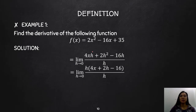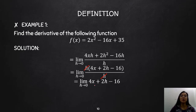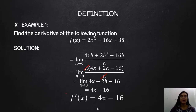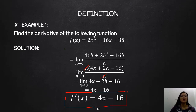Each term in the numerator has an h, so we factor it out. You will be left with h times (4x + 2h − 16) divided by h, and you can cancel h from numerator and denominator. Then you can substitute h = 0, which gives 4x − 16. So the derivative of f(x) = 2x² − 16x + 35 is f′(x) = 4x − 16.